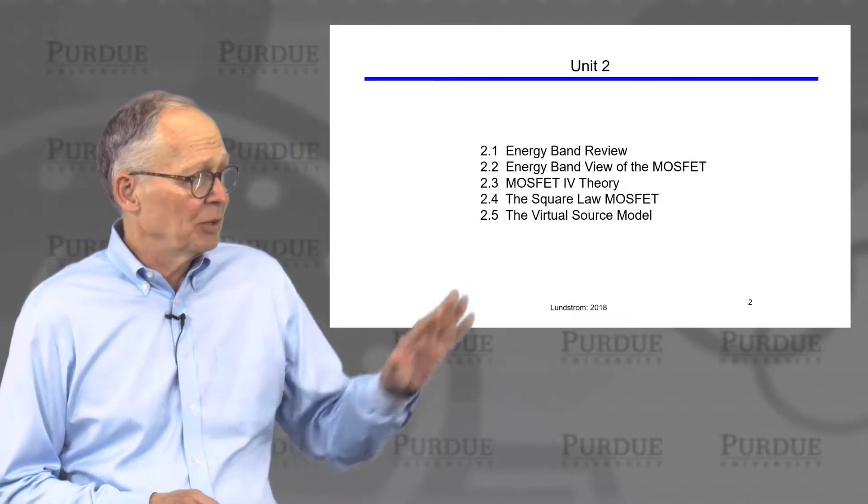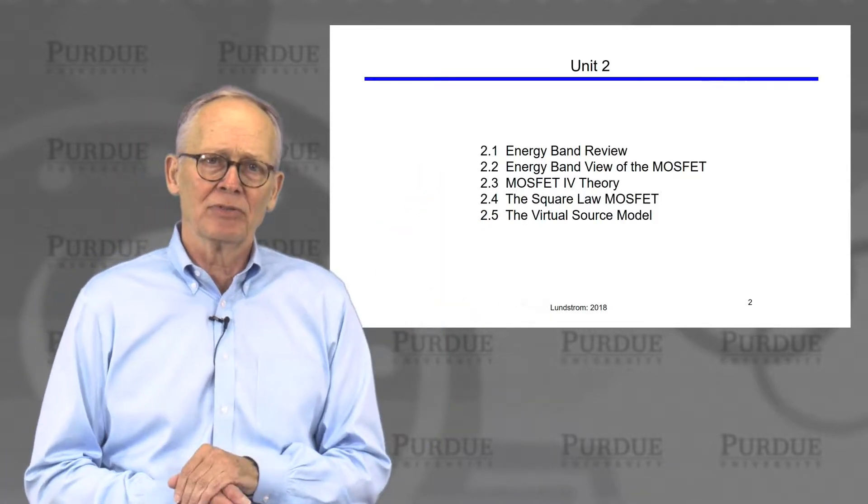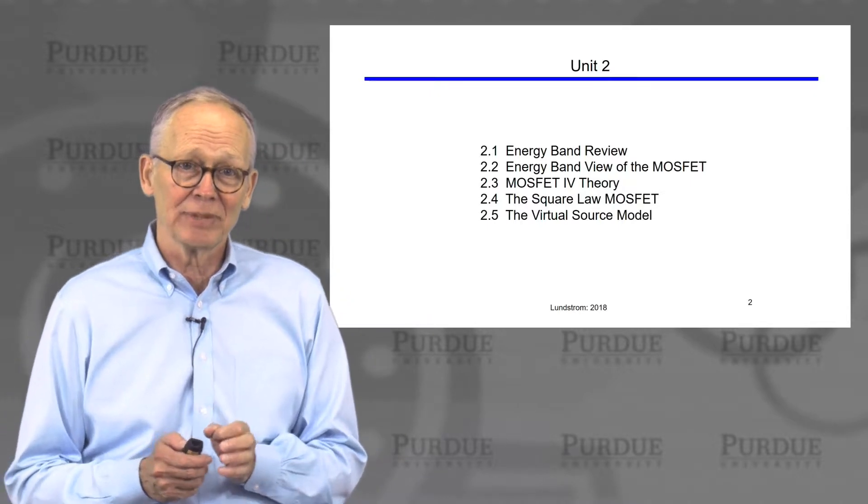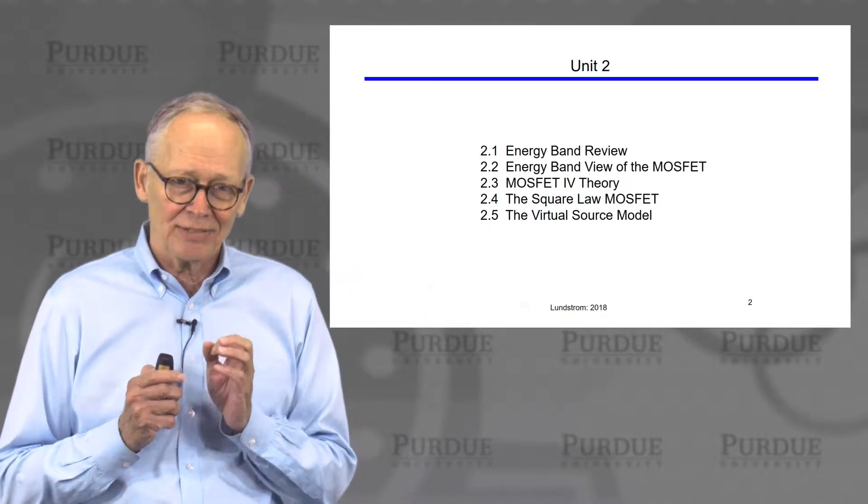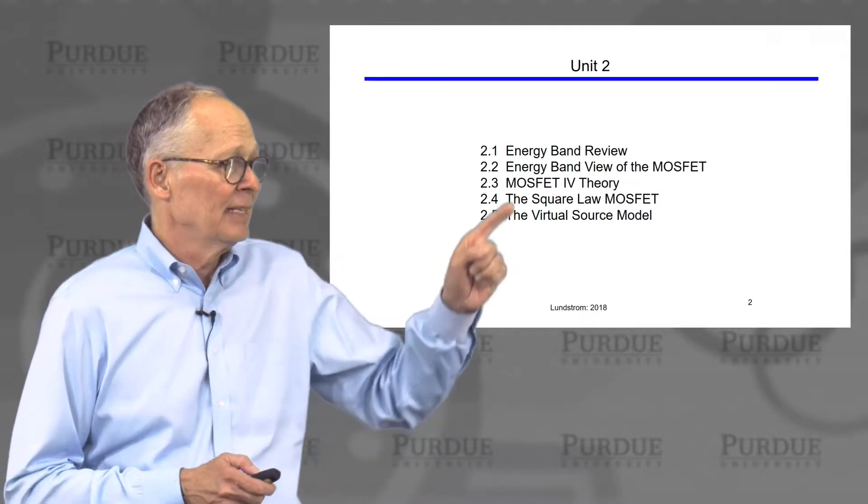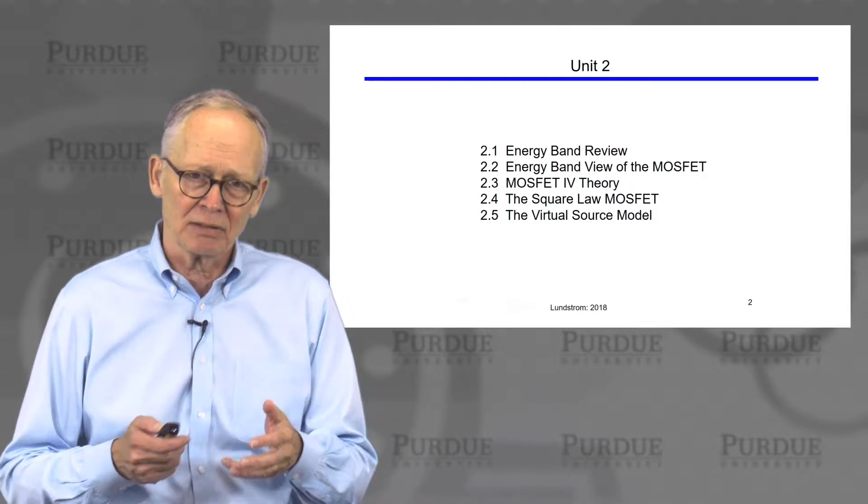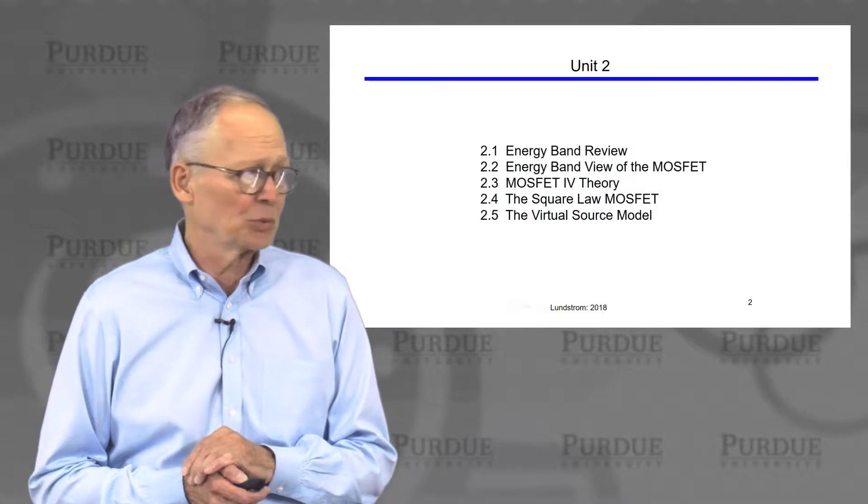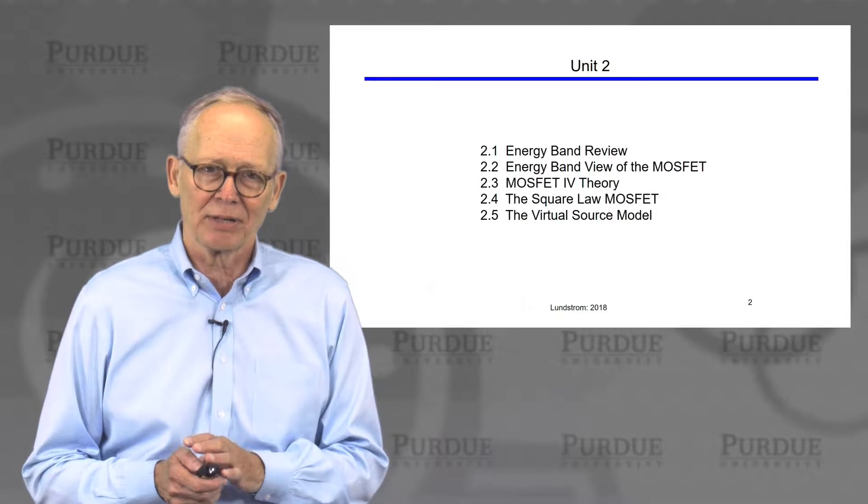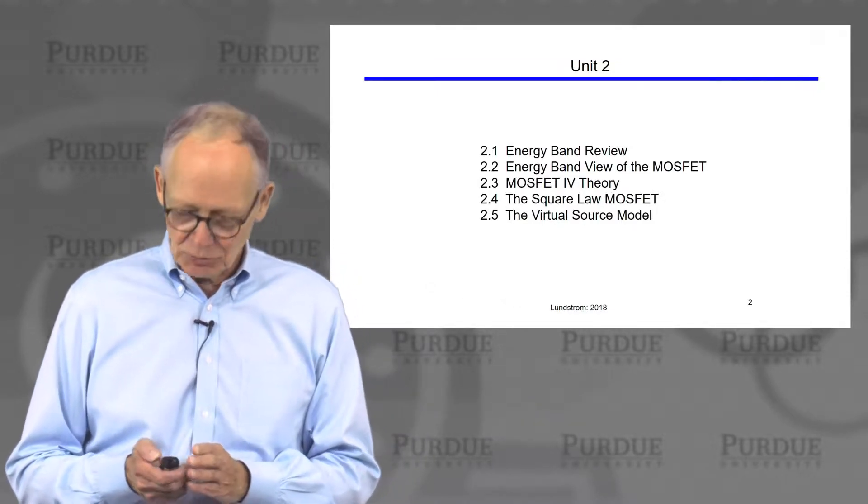The main topics we talked about, after a quick review of energy bands, we went to the energy band view of a MOSFET. This is really important to understand, because if you understand how MOSFETs function in terms of energy band diagrams, you really know most of the story. We then reviewed traditional MOSFET IV theory, doing it in more detail, the classic square law theory, and we put it all together in something we call the virtual source model, a model we're going to continue to develop and refine throughout this course.